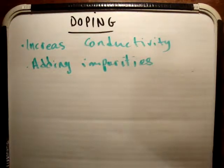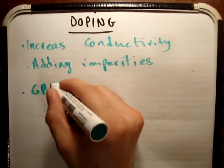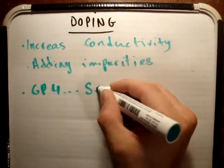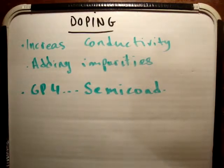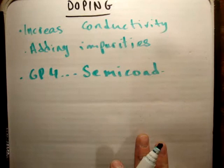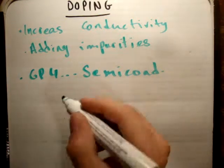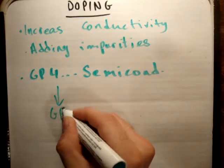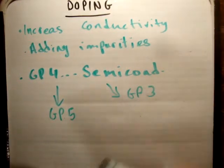If we look at group 4 on the periodic table, we call those the semiconductors. The reason they're semiconductors is because their conduction properties are between those of insulators and conductors. We can add group 5 impurities or group 3 impurities on the periodic table.